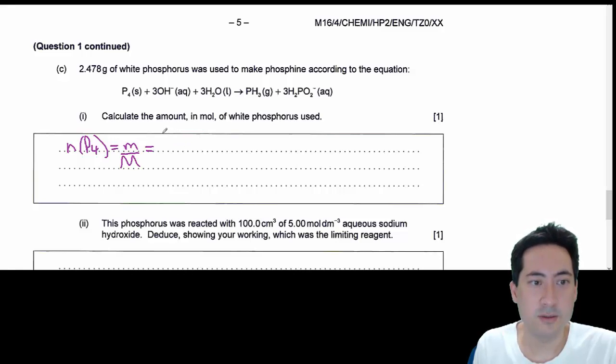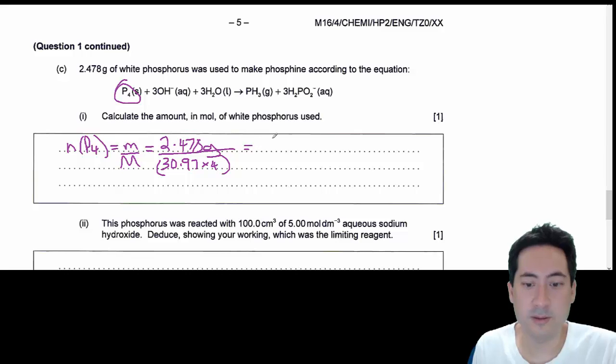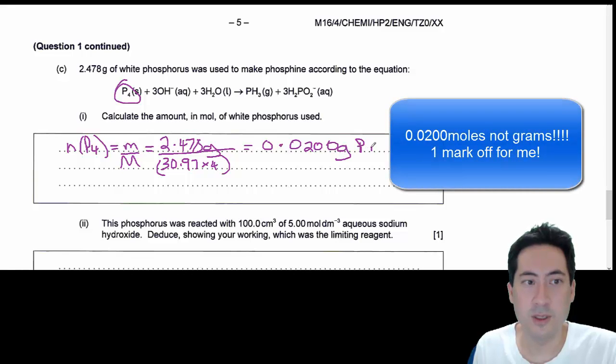Always do your labeling and your formula. So it's a mass that we're given, and so we write 2.478 grams. We go to our data booklet. Phosphorus is 30.97, and there's four of those. If you do the math on that, you're going to get 0.0200 grams of white phosphorus P4.